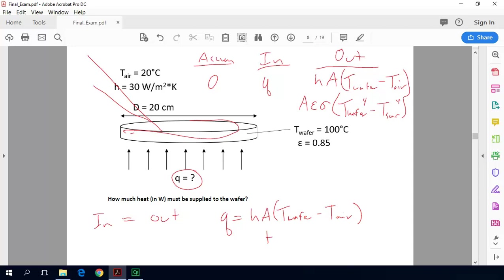So we end up getting Q is just equal to H A times T wafer minus T air, plus our radiative term, the area of the upper surface of the wafer, times its emissivity, times the Stefan Boltzmann constant. Then we've got T wafer to the fourth minus T surfaces to the fourth.